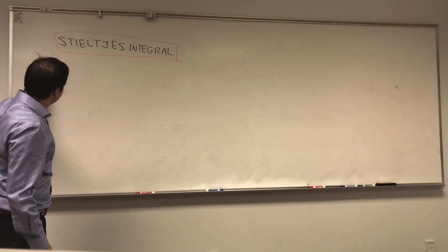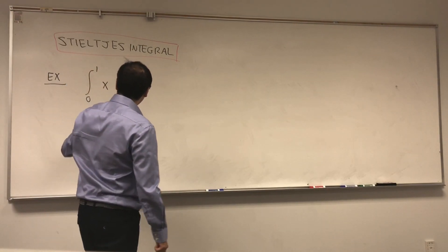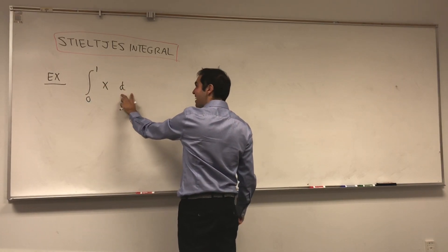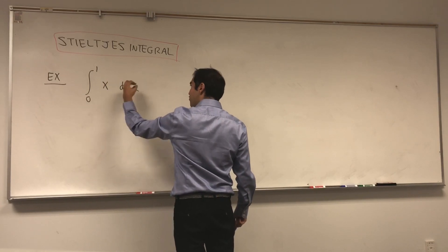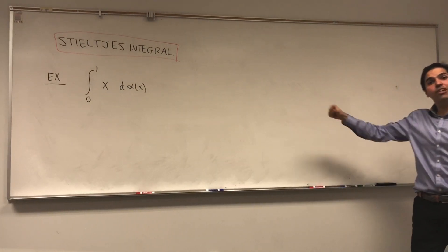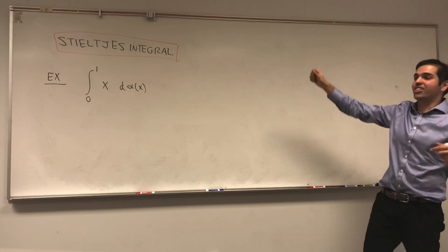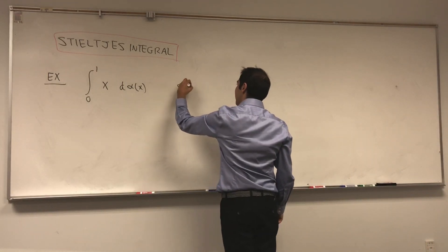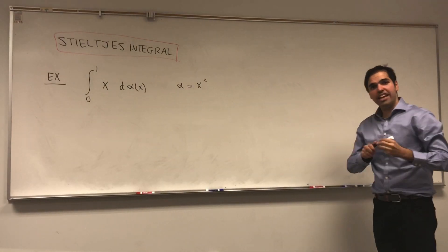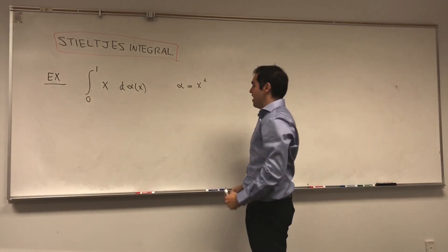We're going to calculate the integral, let's say from 0 to 1, of x d alpha x. For Riemann integrals, you put dx. But here, the difference between Riemann and Stieltjes integrals is that instead of integrating with respect to x, you integrate with respect to some function of x. And in fact, here, let alpha be x squared. So suppose you take x and sort of stretch it out with x squared. Let's see how to evaluate this.